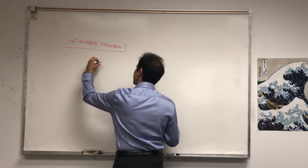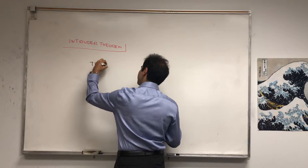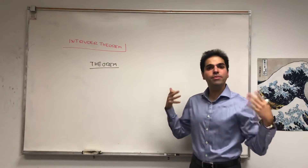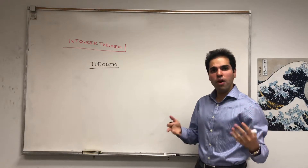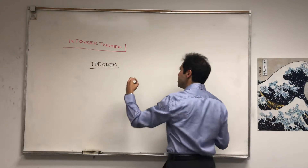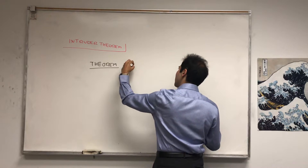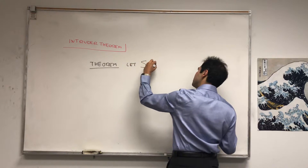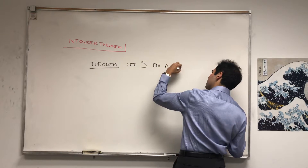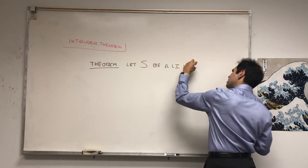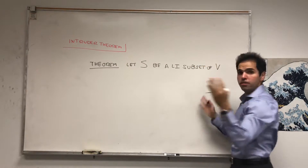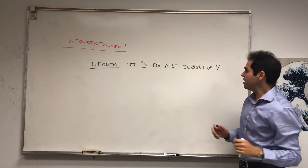So what does it say? It's a theorem. Let V be a vector space and suppose S is a subset of V that's linearly independent. So let S be a linearly independent subset of V — it could be infinite, completely fine.